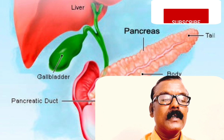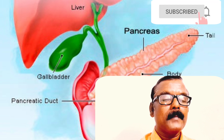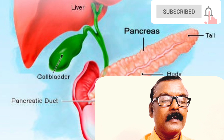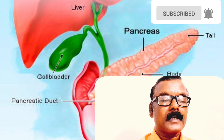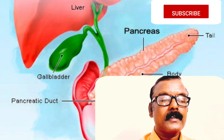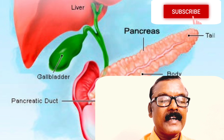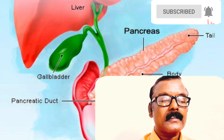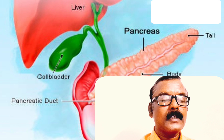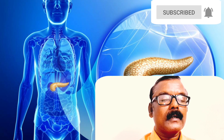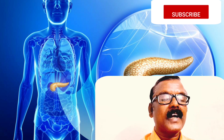Around 95 percent of the pancreas is exocrine tissue. It produces pancreatic enzymes to aid digestion. A healthy pancreas makes about 2.2 pints of these enzymes every day. The remaining 5 percent comprises hundreds of thousands of endocrine cells known as islets of Langerhans. These grape-like cell clusters produce important hormones that regulate pancreatic secretions and control blood sugar.